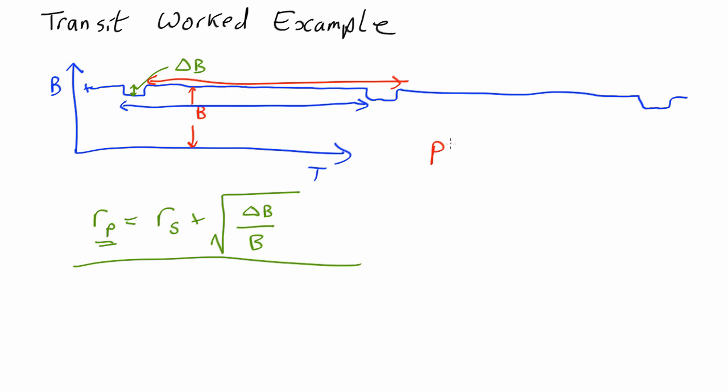If we know the period, p, we can use the same equation we've seen many times before, which is the radius of the planet's orbit. This is how far the planet is from the star is given by the cube root of g m star p squared over 4 pi squared.